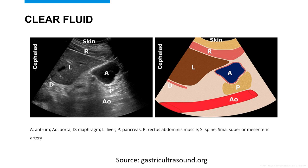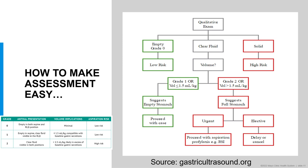This is where we get into the clinical application of our assessments. To make it easy, we are going to break things into qualitative and quantitative assessments. The flow chart on the right is for when the patient is in the right lateral decubitus position. If the patient is supine and you see a stomach full of solids or clear liquids, you are done — the patient should be considered a high aspiration risk. However, if you see the bullseye pattern suggestive of an empty antrum when supine, you need to turn the patient into the right lateral decubitus position.